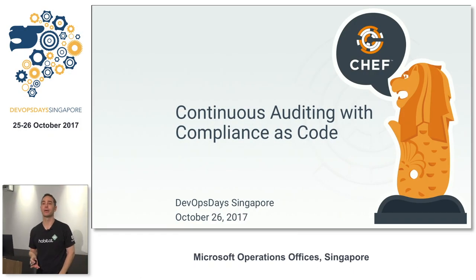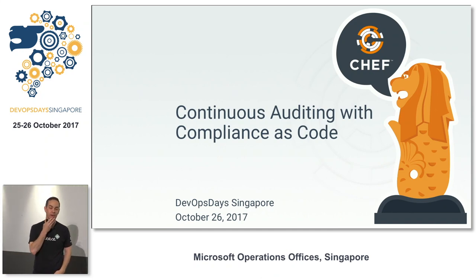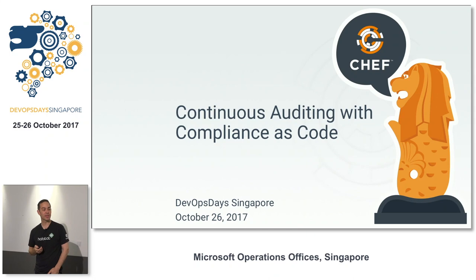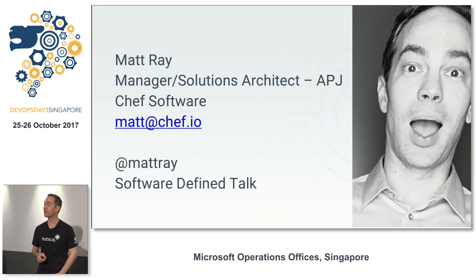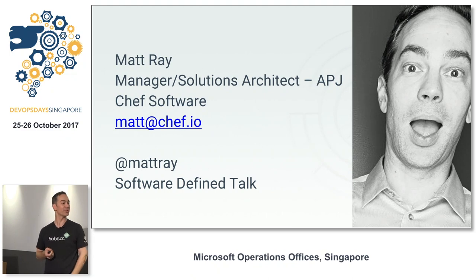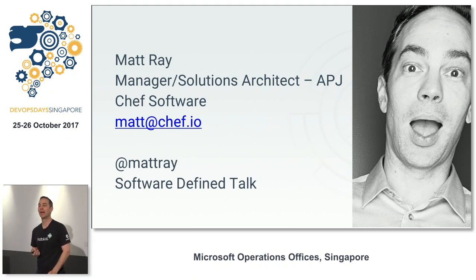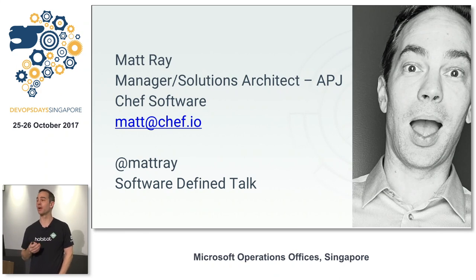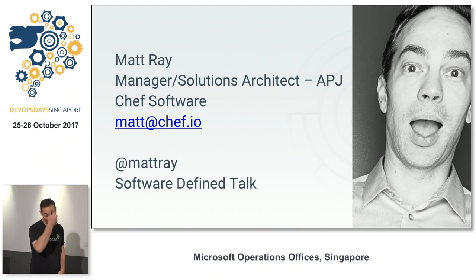I'm going to be talking about compliance as code and the idea of being able to audit all your infrastructure, applications, and everything above. So let's get into it. My name is Matt. I'm the manager and solutions architect for APJ for Chef — basically I'm over here in APAC doing a whole lot of technical stuff. I've been at Chef for about seven years.